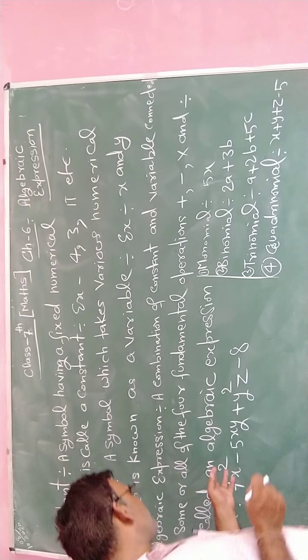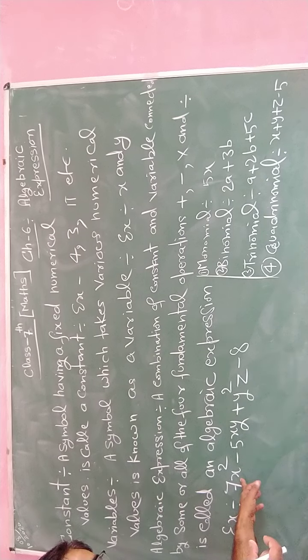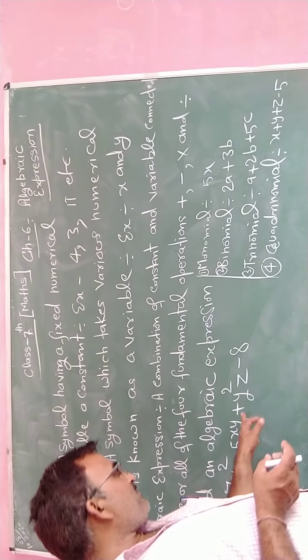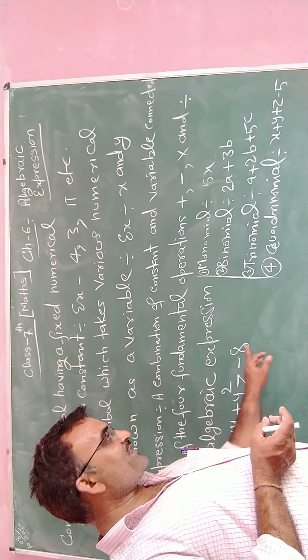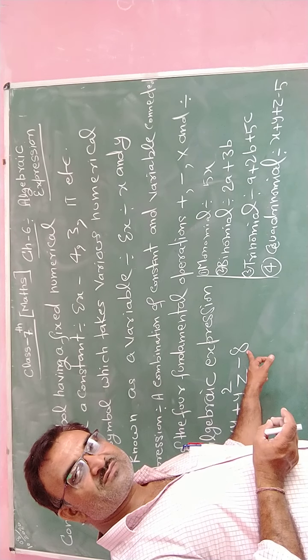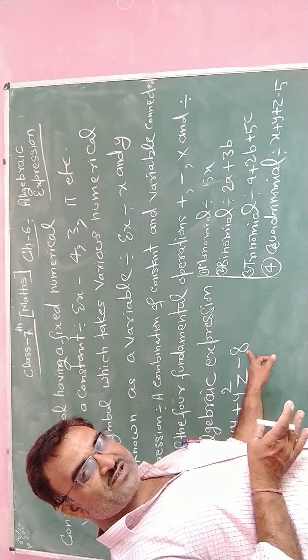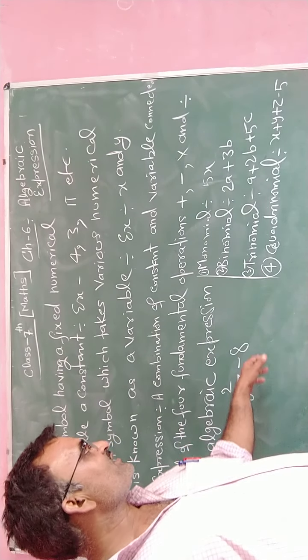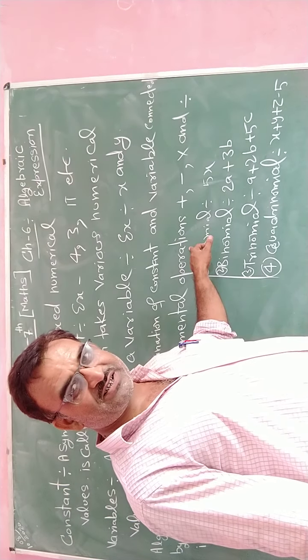For example, 7x square minus xy plus y square minus 8. Now, this is an example of algebraic expressions. Because variables are connected together.